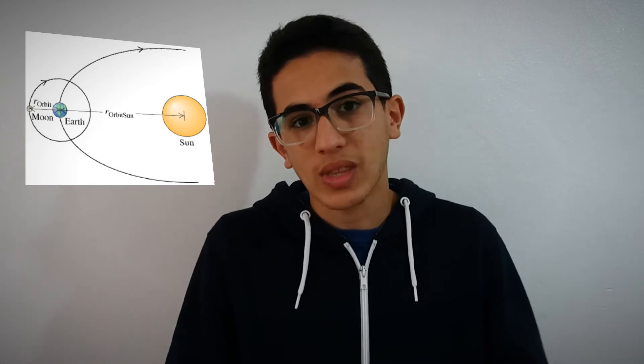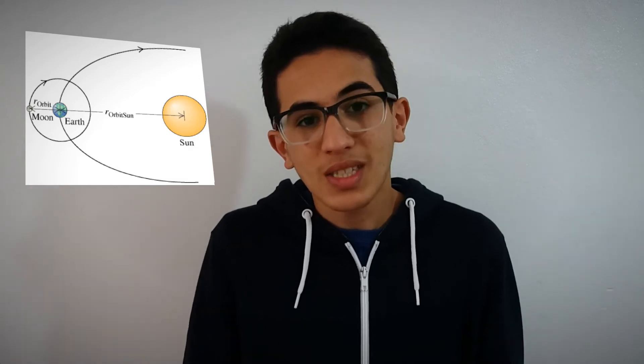Newton not only discovered why objects fall, but also how they fall. He invented calculus, allowing us to calculate the force of gravity for any objects in the universe, which leads us to predict the motion of any celestial objects, like planets around a star, or moons around planets — starting with our moon, that is falling but never falls.